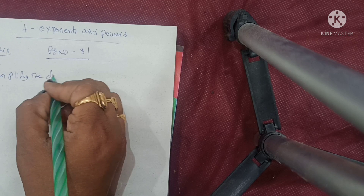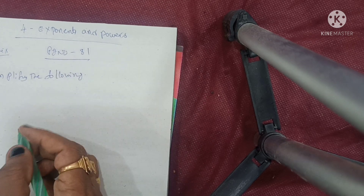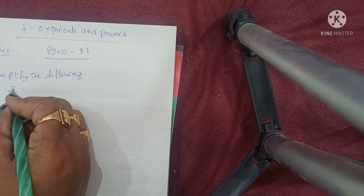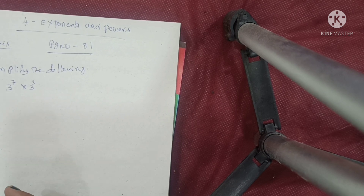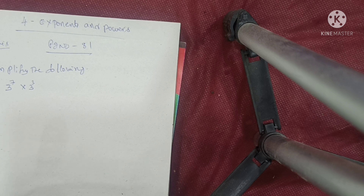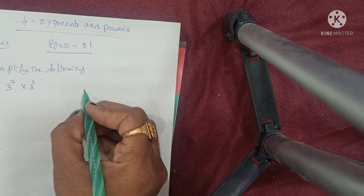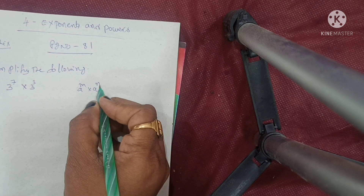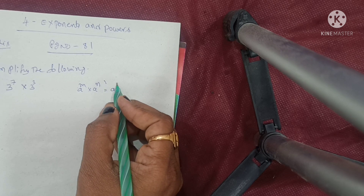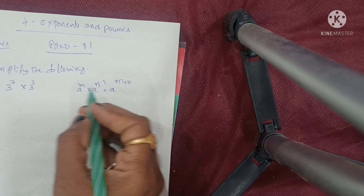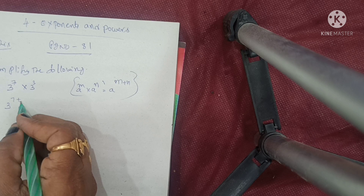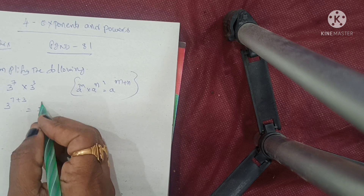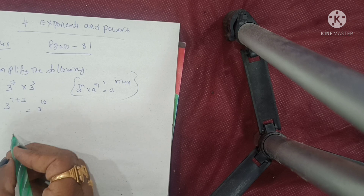Simplify the following. First one: 3 power of 7 into 3 power of 3. Using the formula a^m × a^n = a^(m+n), this equals 3 power of 7 plus 3, that is 3 power of 10. Simple.